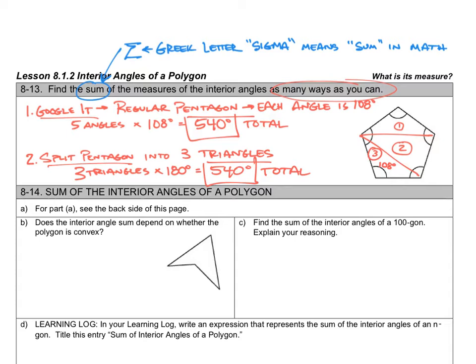And now let's go to part B. Does the interior angle sum depend on whether the polygon is convex? Well, all of the polygons we looked on the back side were convex, but the one shown here is concave. Why is it concave? Well, because it has this piece right here that kind of cuts in.